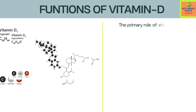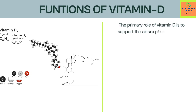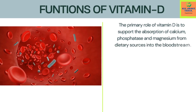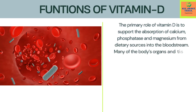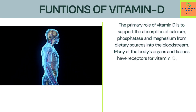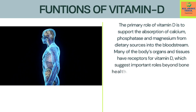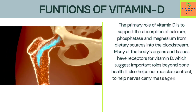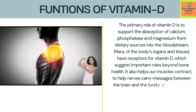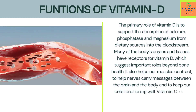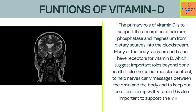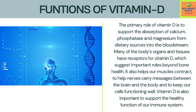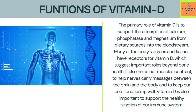Functions of Vitamin D: The primary role of Vitamin D is to support the absorption of calcium, phosphate, and magnesium from dietary sources into the bloodstream. Many of the body's organs and tissues have receptors for Vitamin D, which suggests important roles beyond bone health. It also helps our muscles contract, helps nerves carry messages between the brain and the body, keeps our cells functioning well, and is important to support the healthy function of our immune system.